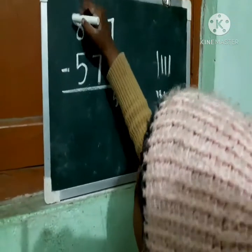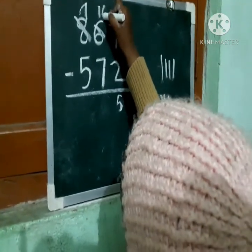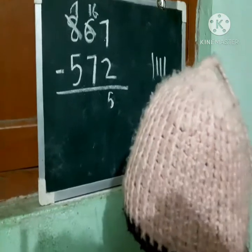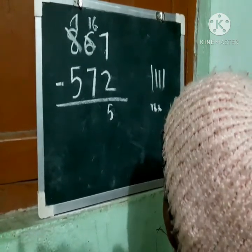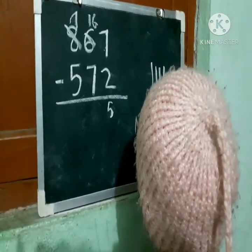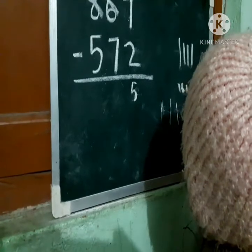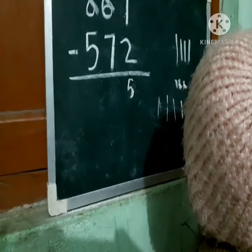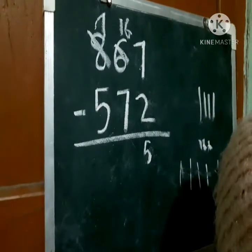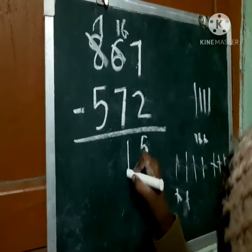So we will borrow 1 tenth. 8 becomes 7. 6 becomes 16. Counting from 16: 8, 9, 10, 11, 12, 13, 14, 15 — it's 9.